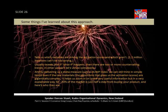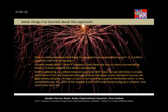We could keep doing it with past data. What are the things learned from this approach? It tells us which variables are driving the activation. It usually reveals that what-if happens — there are two or more countervailing trends: some people tune in, some people tune out. By delivering bump as a kind of meta-measure — the bump index — we can still think in simple terms, even though the neural network has gone through all these zillions of iterations. It's given to us in a very simple graphical picture: bump index, one simple curve, and then we can work from there.